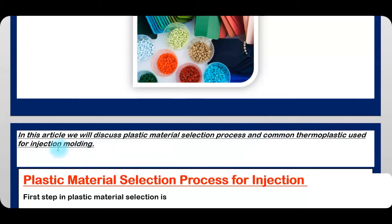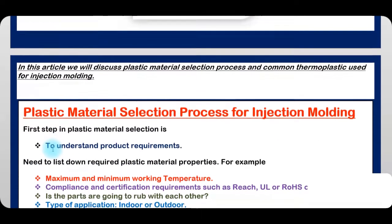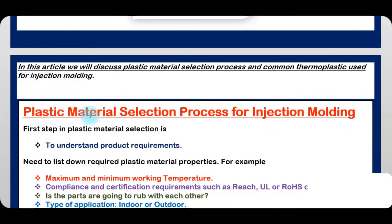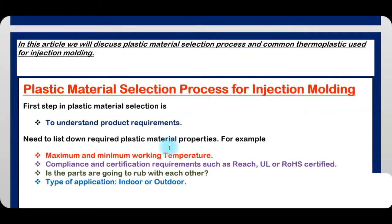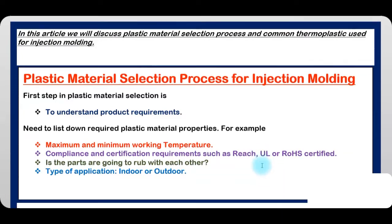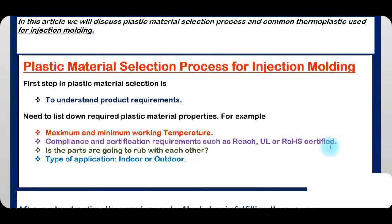This discussion covers the plastic material selection process and common thermoplastics used for injection molding. The first step in plastic material selection is to understand the product requirements — list down the required plastic material properties, for example maximum and minimum working temperature, compliance and certification requirements such as REACH, UL grade, or RoHS certified.